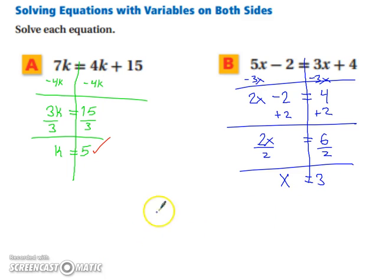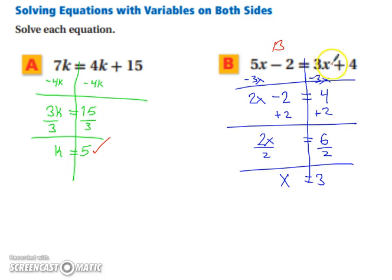So now when we plug things back in, we end up with 5 times 3 minus 2, which is 13. And 3 times 3 is 9, plus 4, which is 13. So we're good to go.